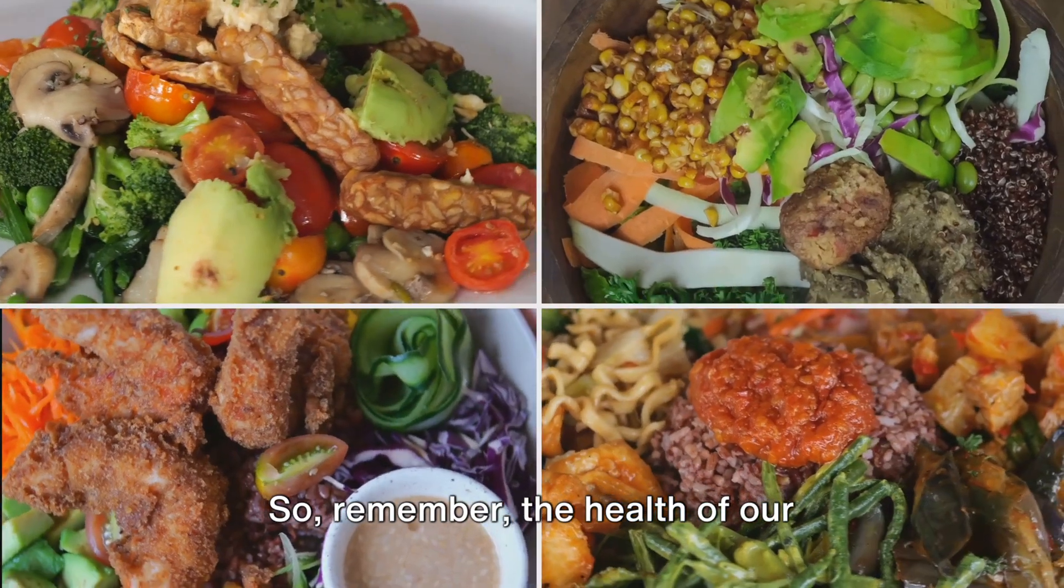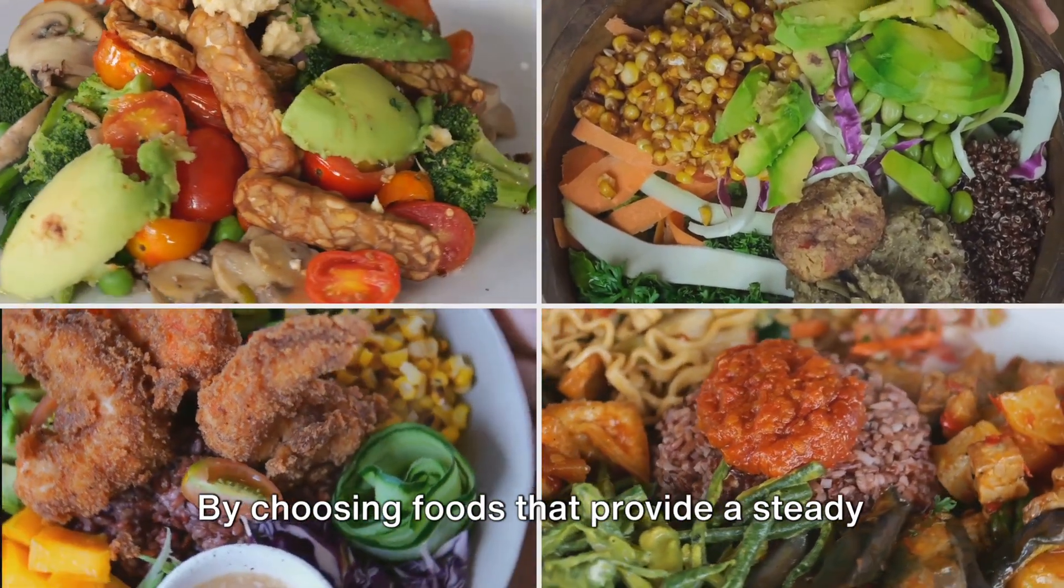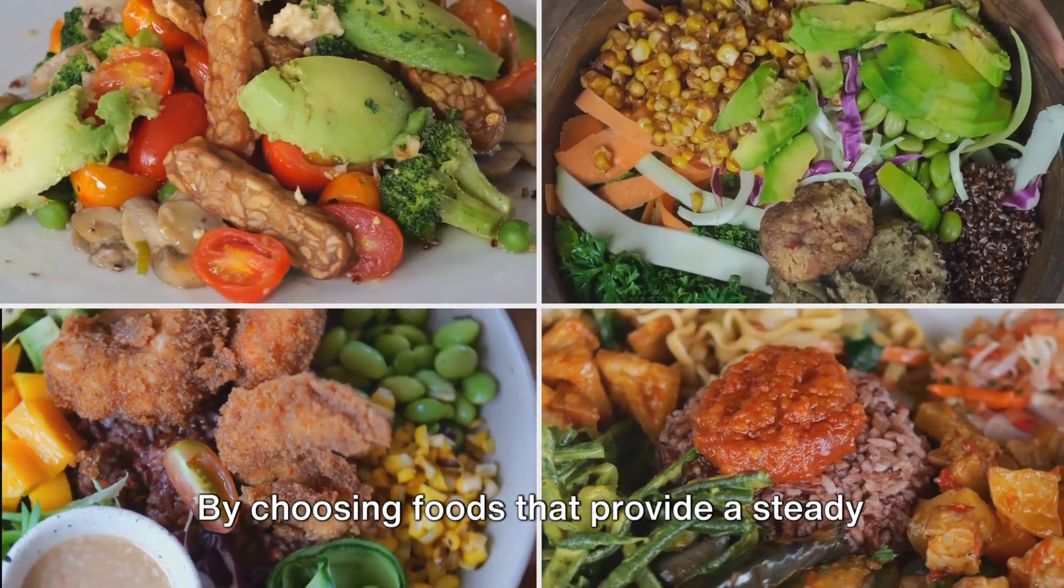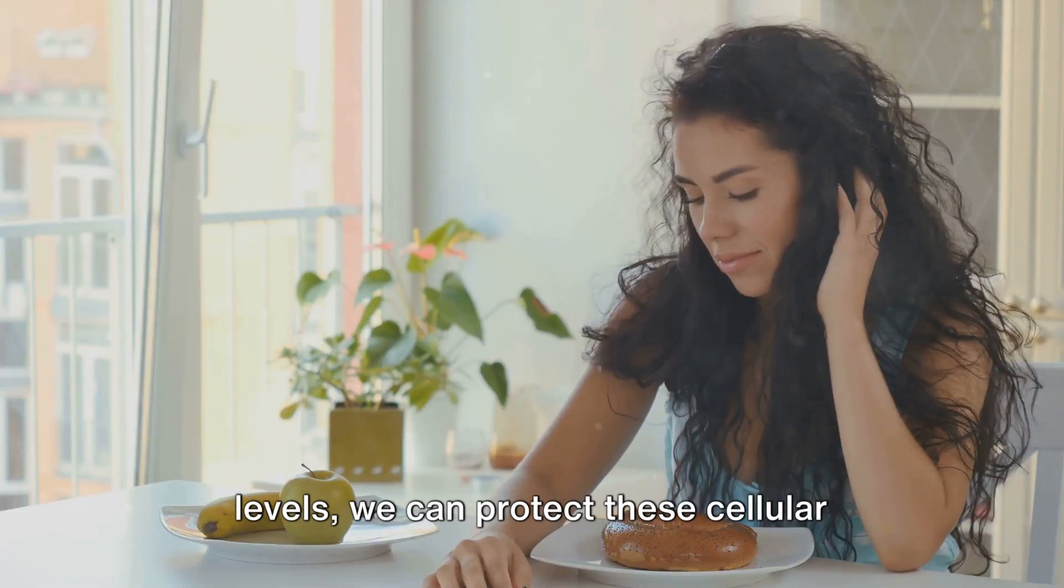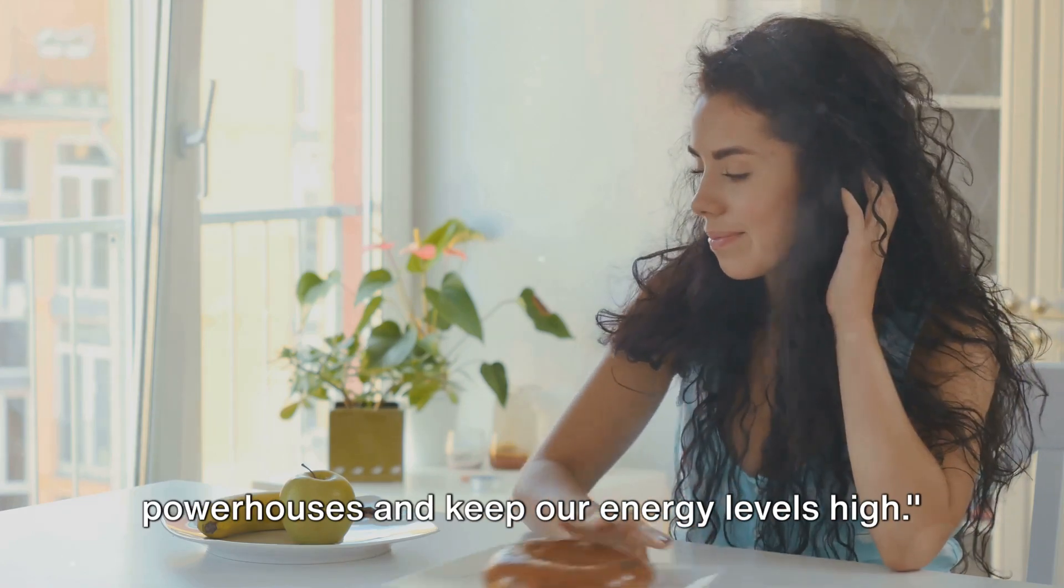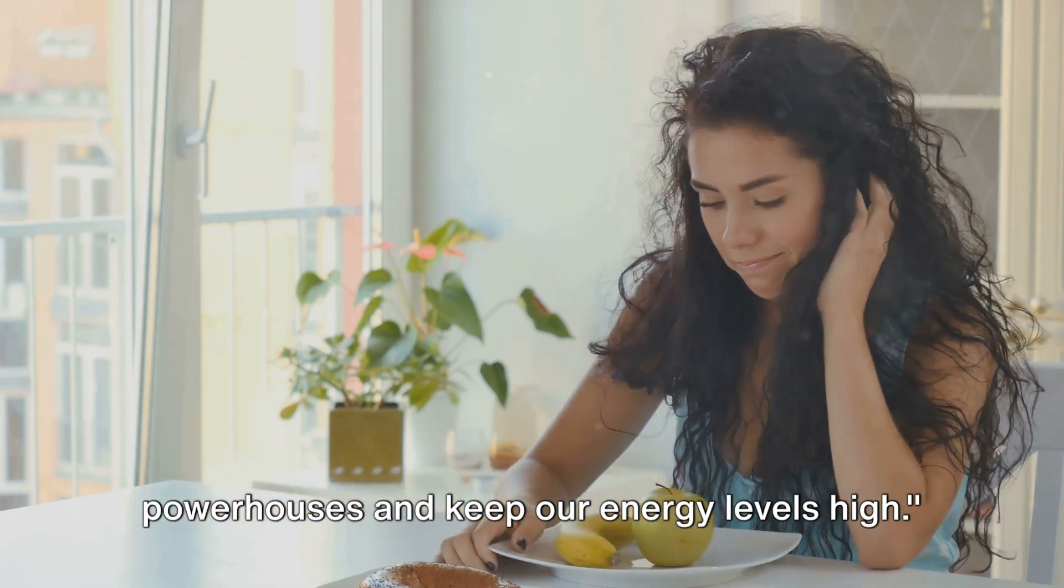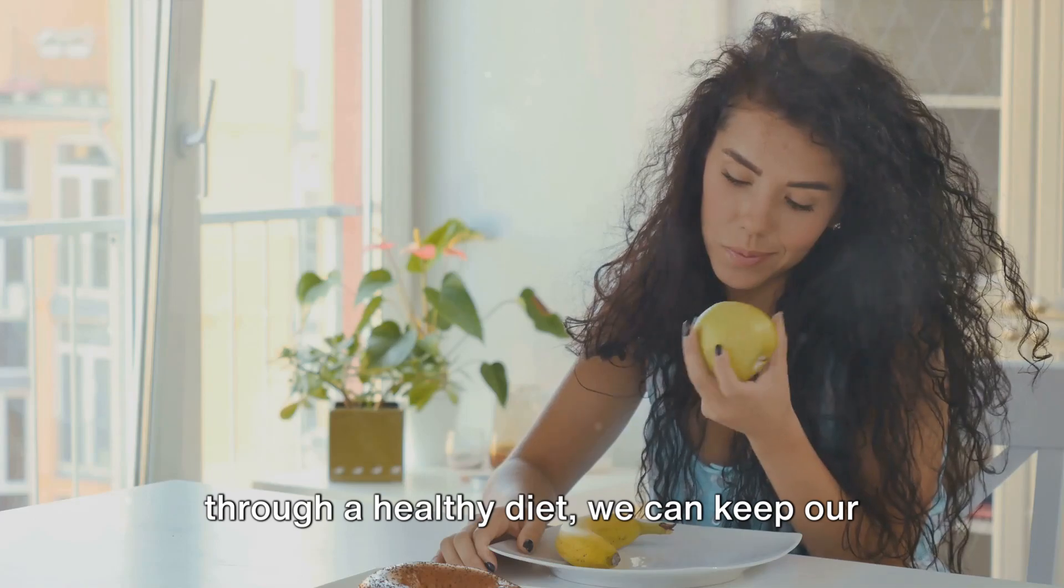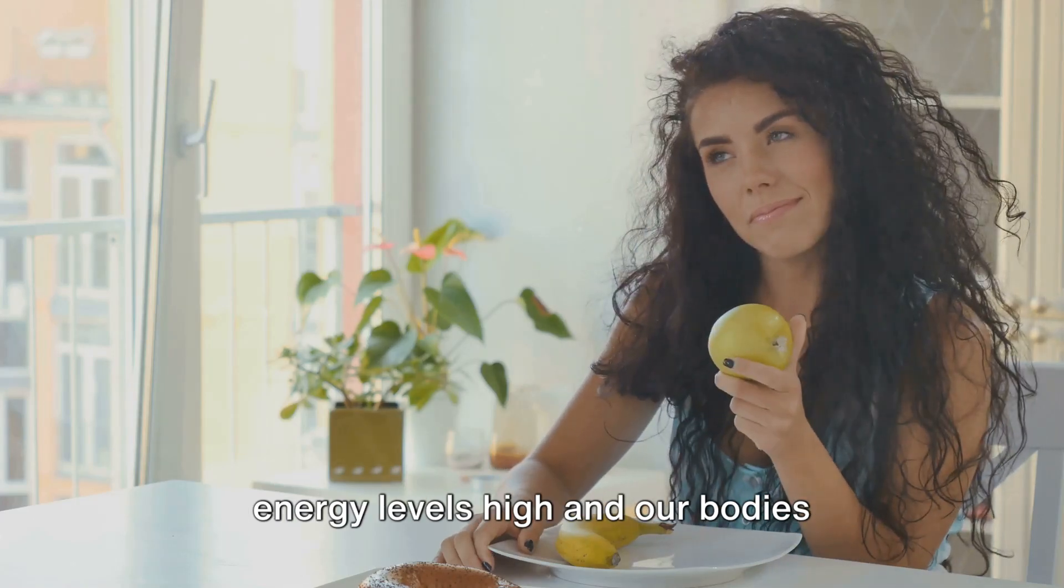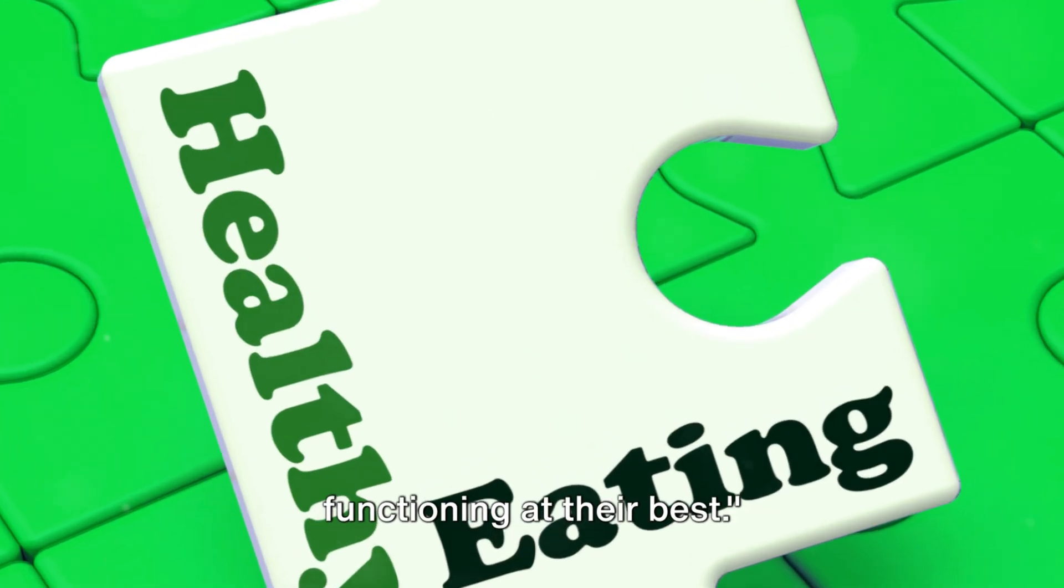So remember, the health of our mitochondria is in our hands. By choosing foods that provide a steady supply of glucose, and by avoiding those that cause spikes in our blood sugar levels, we can protect these cellular powerhouses and keep our energy levels high. By taking care of our mitochondria through a healthy diet, we can keep our energy levels high and our bodies functioning at their best.